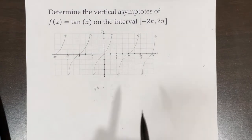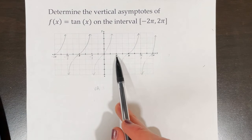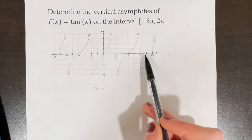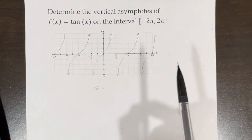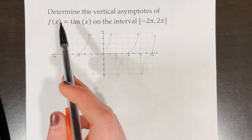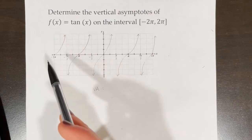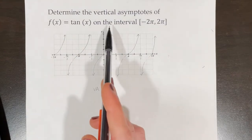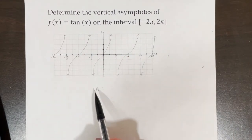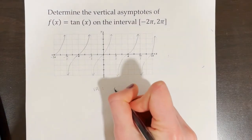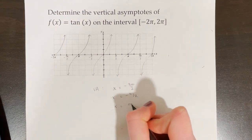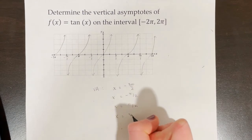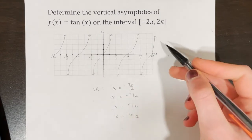If the problem just said 'determine the vertical asymptotes of tan(x),' we'd be writing them out for a very long time. Luckily, we have a specific interval to stick to. Within the interval from −2π to 2π, the vertical asymptotes are: x = −3π/2, x = −π/2, x = π/2, and x = 3π/2.